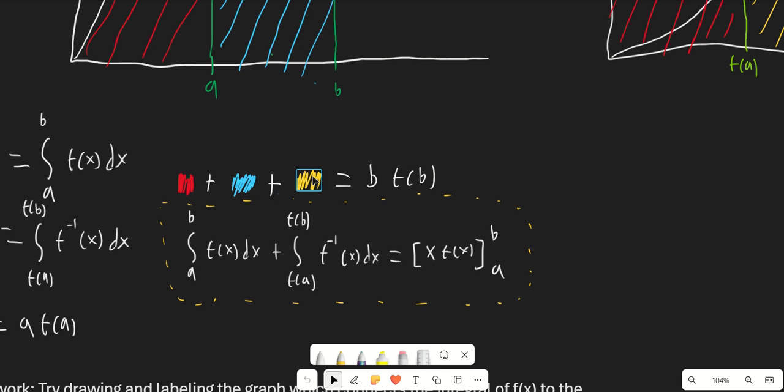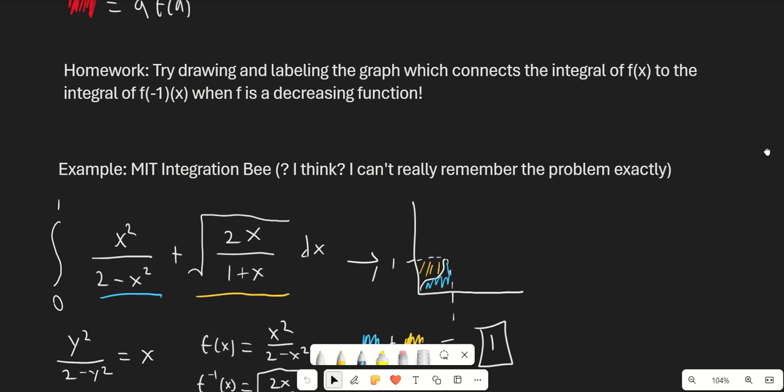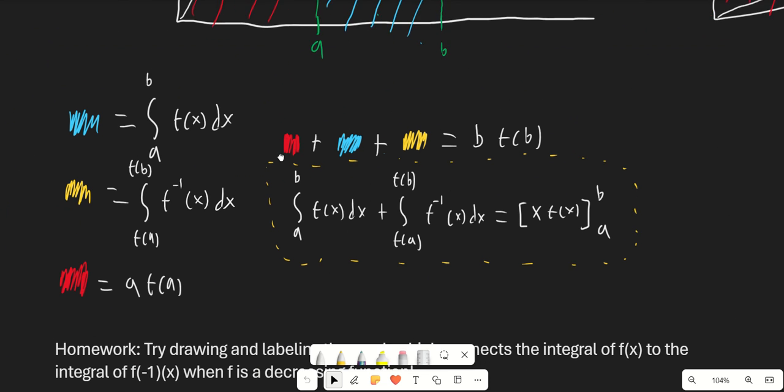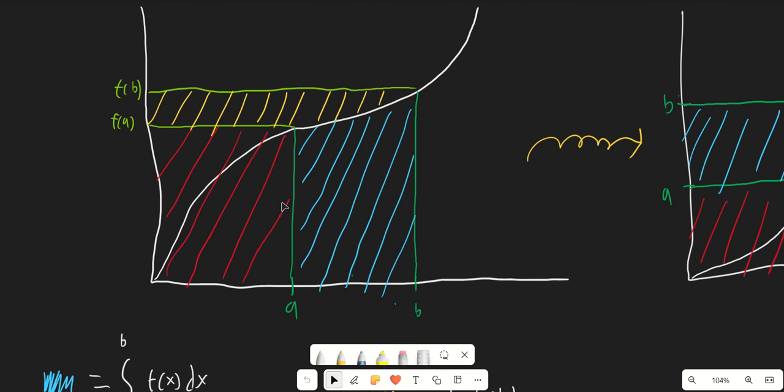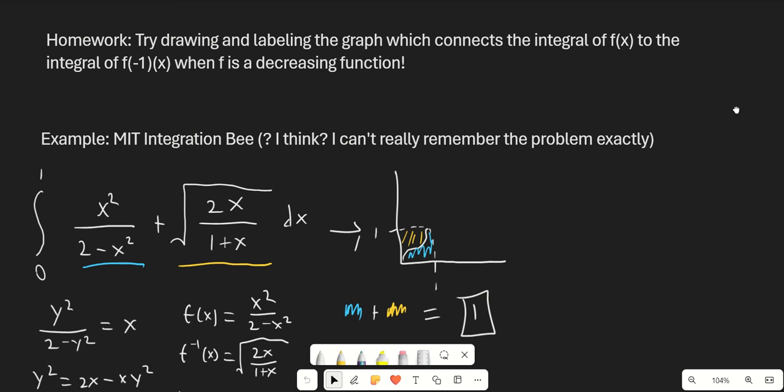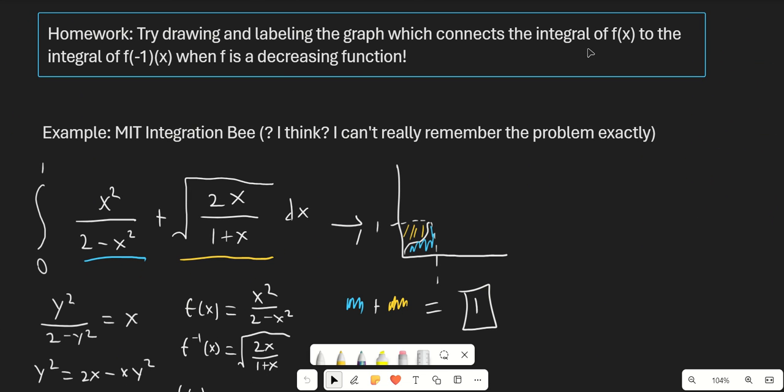Often in these problems it's better to just apply the formula directly without spending extra time on the graphical interpretation. But there are a few problems where it's actually better to look at the graph. Here's some homework for you: try drawing and labeling the graph the same way I did, but instead of the case where f(x) is monotone increasing, draw the graph which connects the integral of f(x) to the integral of f inverse of x when f is a decreasing function.